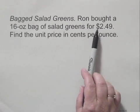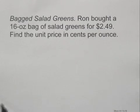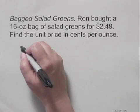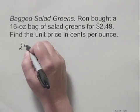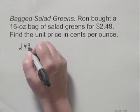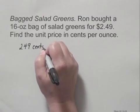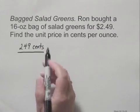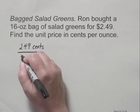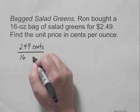The price is given in dollars — $2.49 — which we write as 249 cents, converting the dollars to cents. And in the denominator, we write 16 ounces.